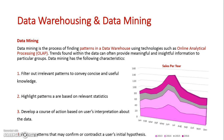There are four steps in how to actually data mine a data warehouse. First, we need to get rid of all the irrelevant patterns — removing data that is not relevant to us. Next, we highlight patterns that are relevant, which might be based on formulas or statistics. The third step is to develop hypotheses — a course of action based on these useful statistics. Finally, we review these patterns, which will either confirm or contradict our beliefs.